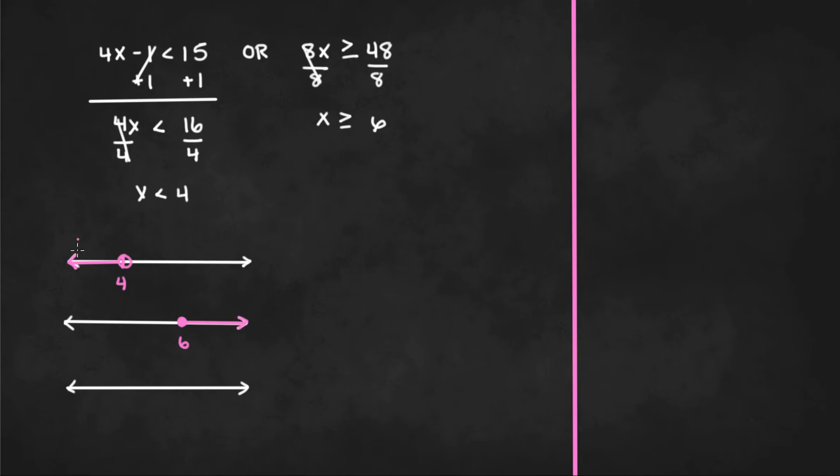Now we can just combine both of the number lines together to get a graph that looks like this. And that would be the graph of a compound inequality.